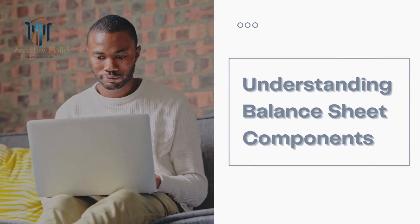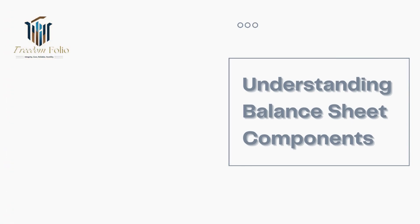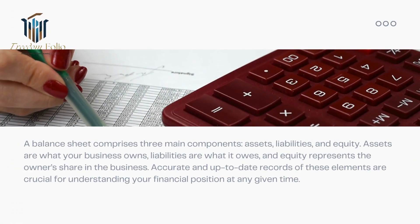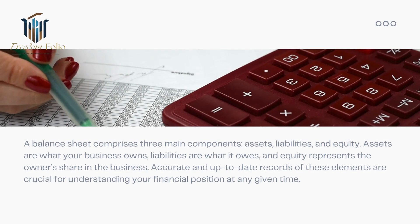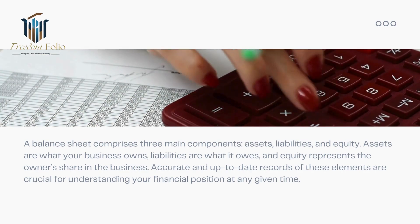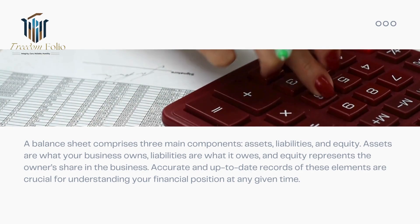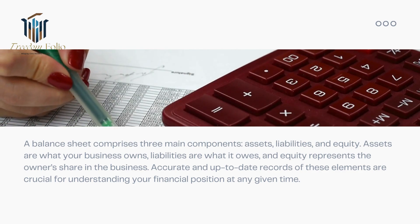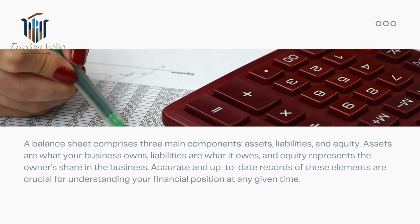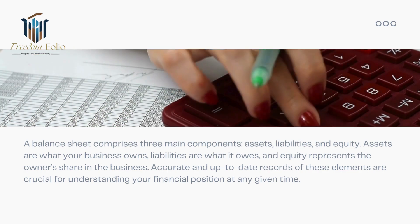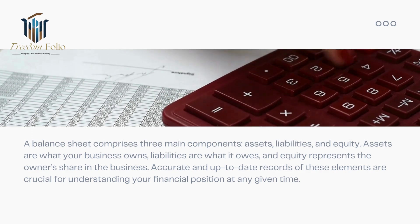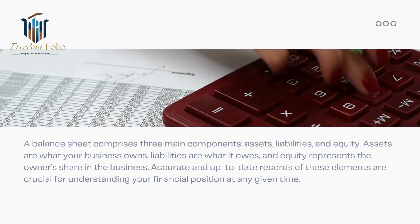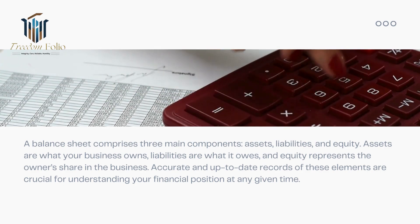A balance sheet comprises three main components: assets, liabilities, and equity. Assets are what your business owns, liabilities are what it owes, and equity represents the owner's share in the business. Accurate and up-to-date records of these elements are crucial for understanding your financial position at any given time.